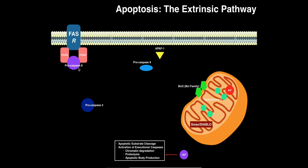While caspases are in their pro-form or zymogen form — such as pro-caspase-8 and pro-caspase-3 — they're not capable of doing anything. Even in the presence of FAS ligand, this receptor is held inactive. There are other proteins associated with the receptor that serve as inhibitors of the FAS receptor. Even if FAS ligand binds the receptor, those inhibitors shut the receptor off, so pro-caspase-8 would not become active. These inhibitors are normally produced by a healthy cell that does not require cell suicide.